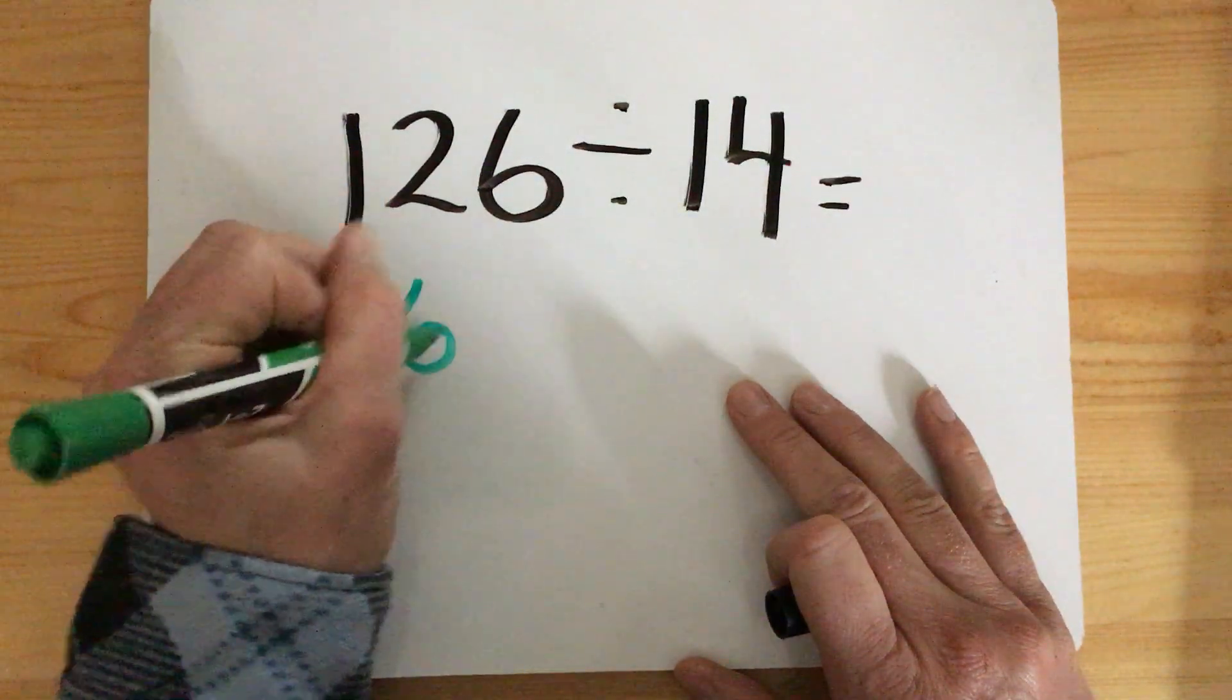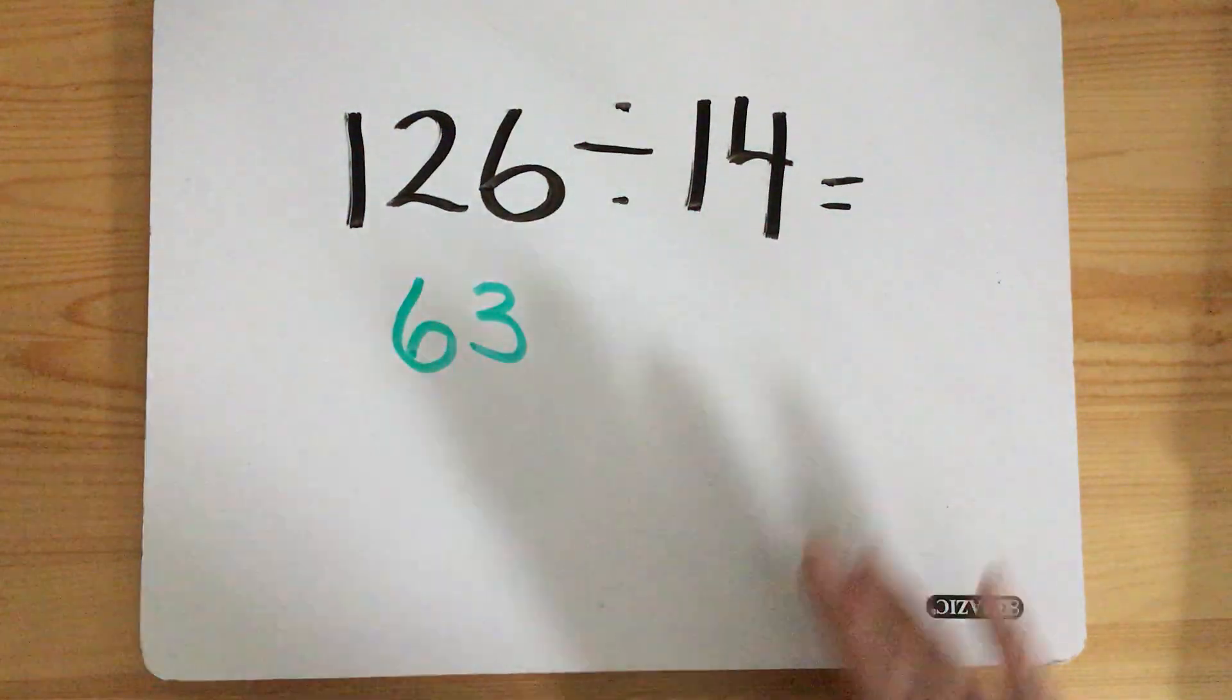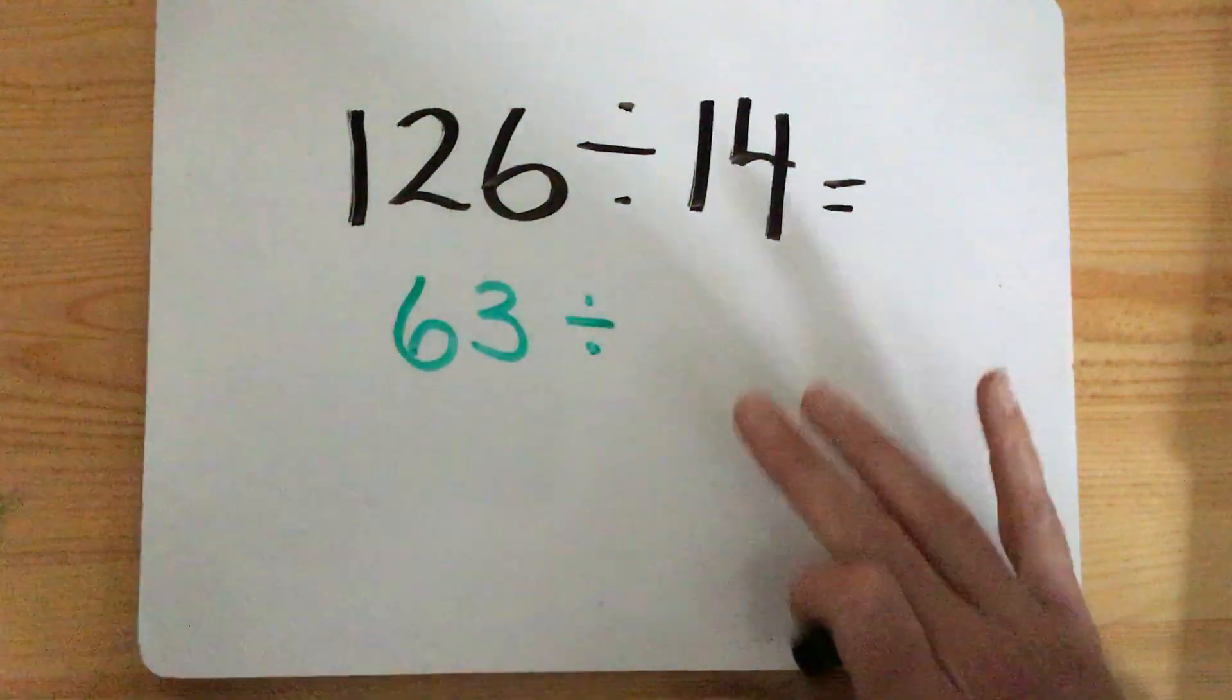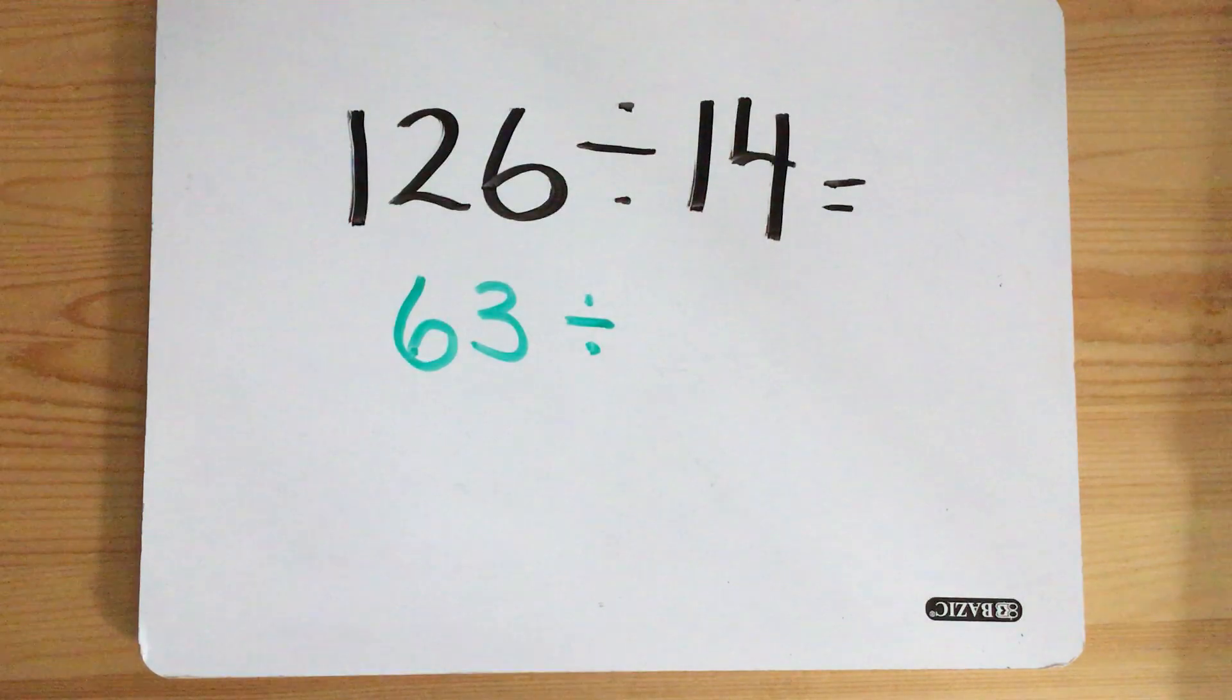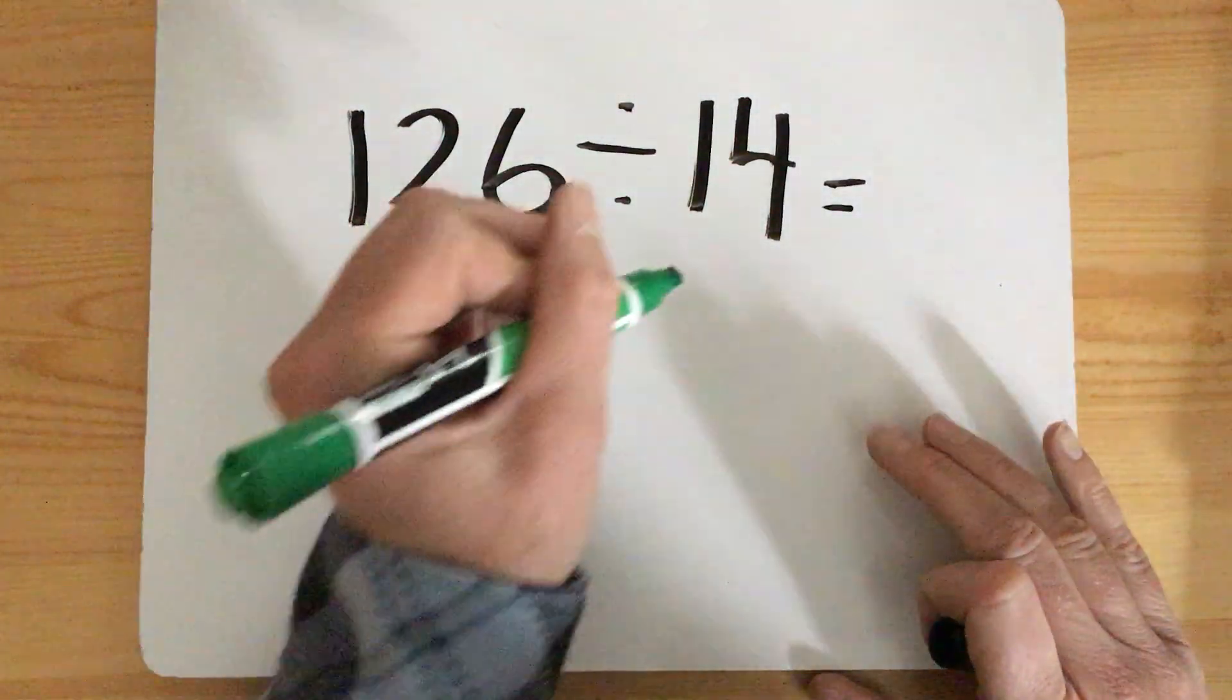If I double 63, I get 126. And then I need to know now what is half of 14? What plus what equals 14? Well, that's easy, it's 7.